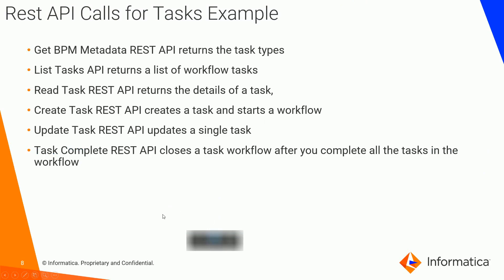Next we will talk about the REST API calls for tasks. Outside the E360 application, we have REST APIs for different task functionalities. For example, if I want to get BPM metadata, there is a REST call available for that. If I want to list all tasks, read all task details, create a task outside E360, update an existing task, or complete an existing task — we have REST API calls supporting all these functionalities.